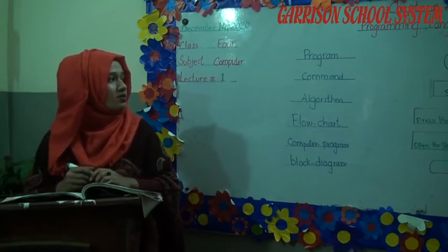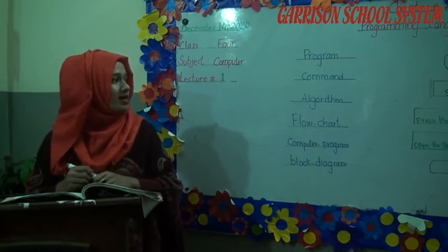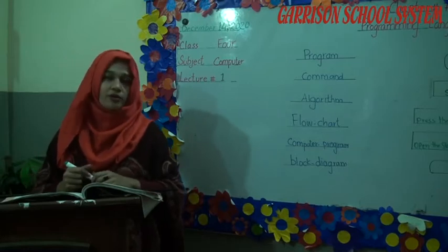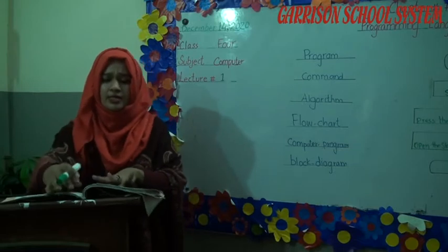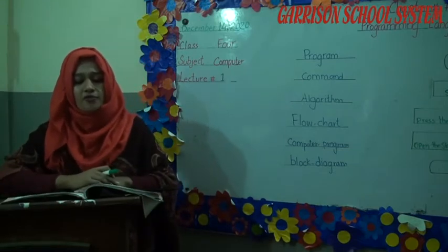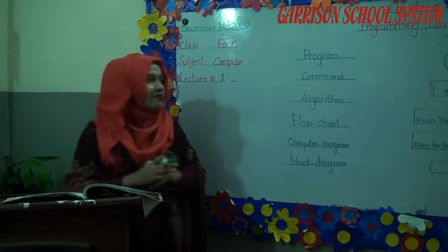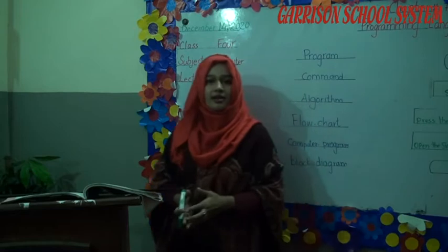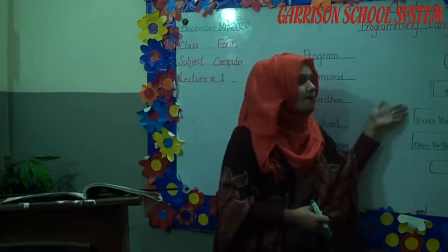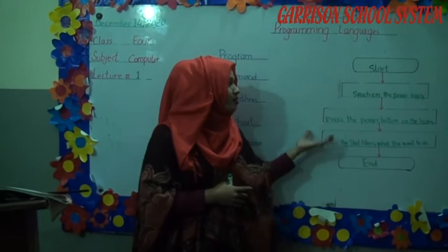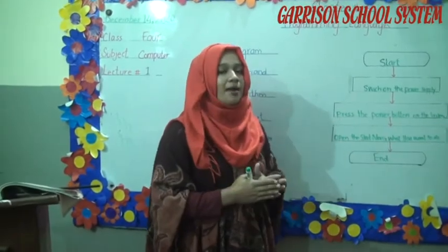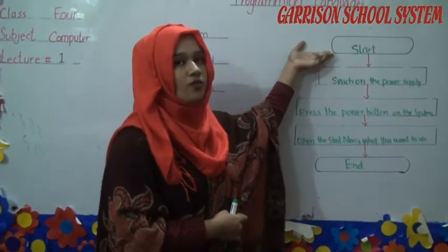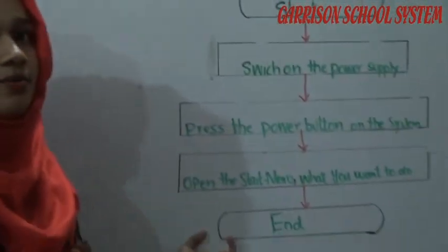Here is a flowchart that shows the steps of starting up the computer. The steps are: Start → Switch on the power supply → Press the power button on the system → Open the start menu → Choose what you want to do on the computer → End. You can use the oval symbol to represent the start and end of the flowchart.